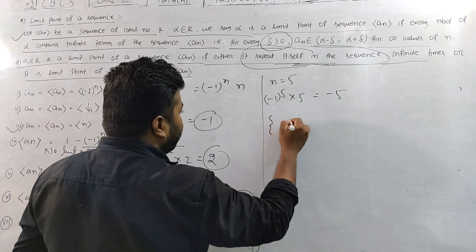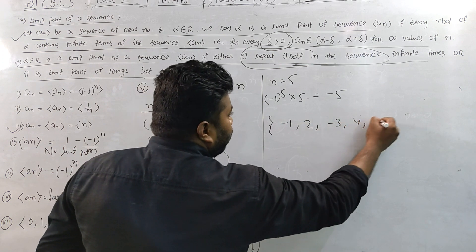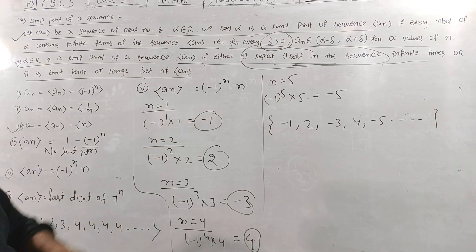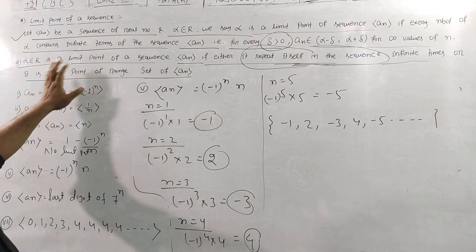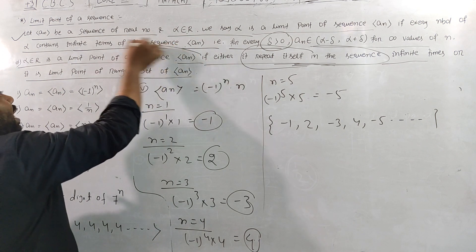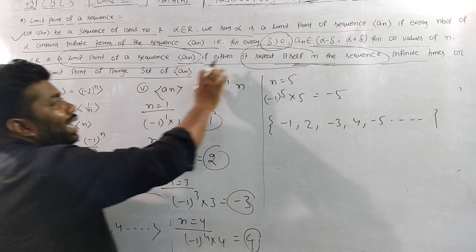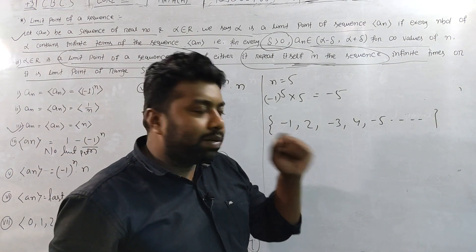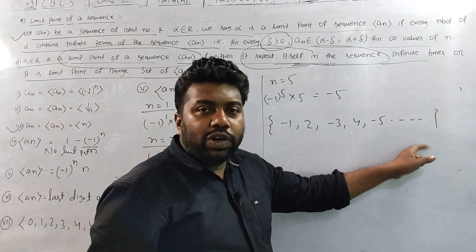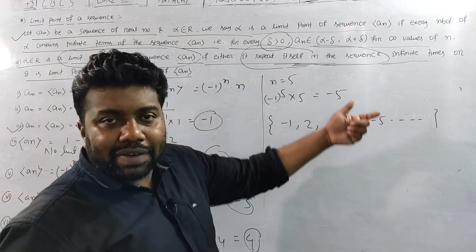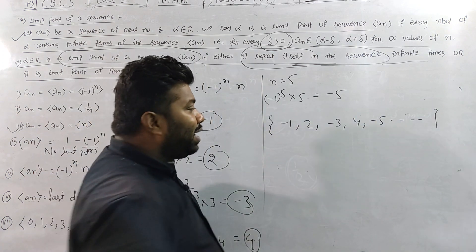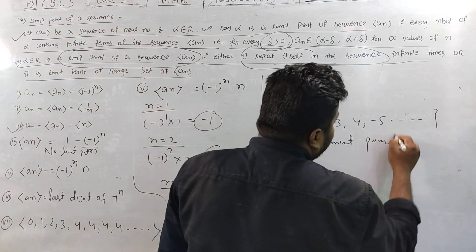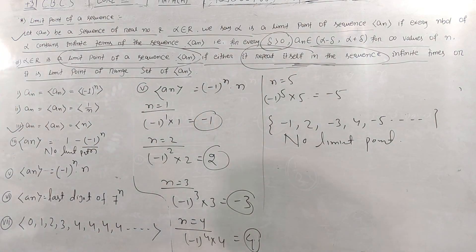So the sequence goes: -1, 2, -3, 4, -5... repeating infinitely. By our definition, alpha is a limit point if the sequence takes that value infinitely many times. Here each value is distinct, so there is no limit point.